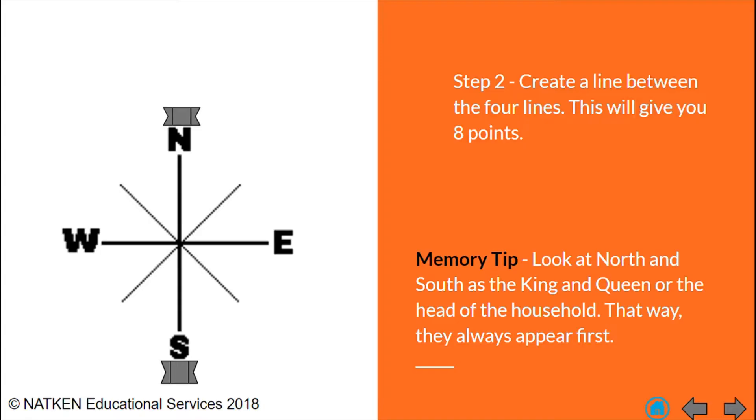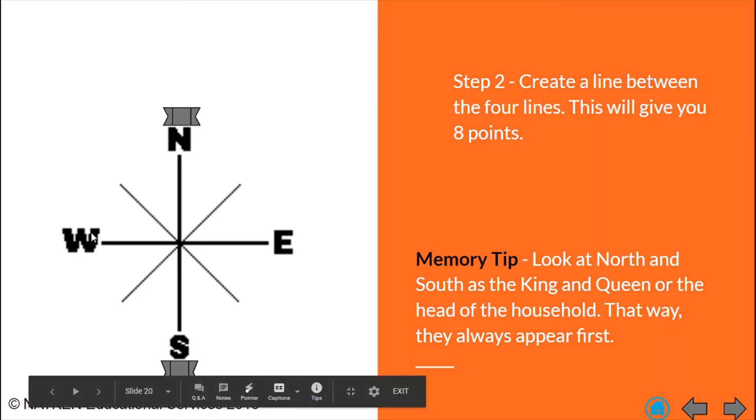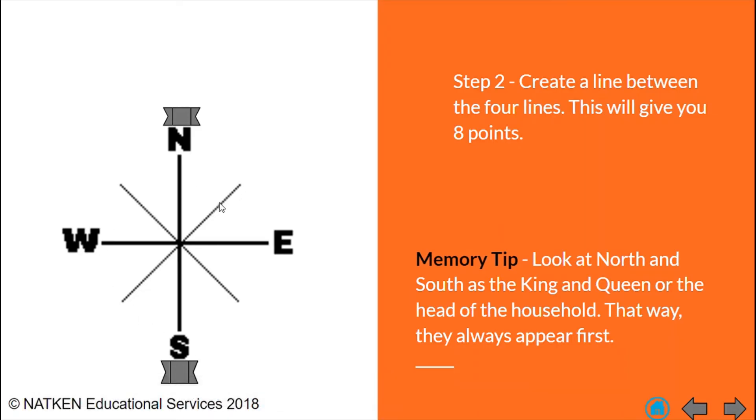Step two, you are going to keep your four-point compass but you are going to create a line between the four lines that you have. So we have north, east, south, west. Here in between north and east we are going to create one line that goes all the way across and between north and west we are creating another line that goes all the way across just the same. Now once we have put in our lines we would end up with eight points.